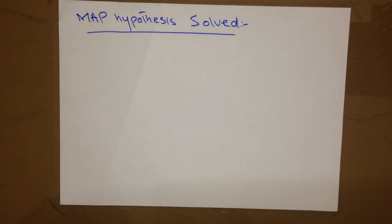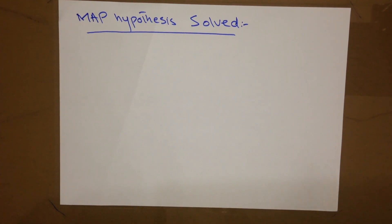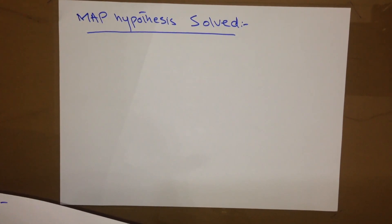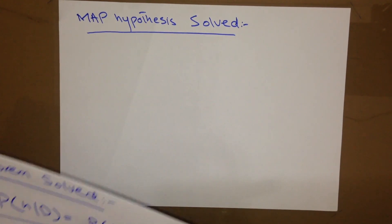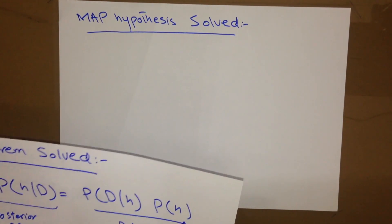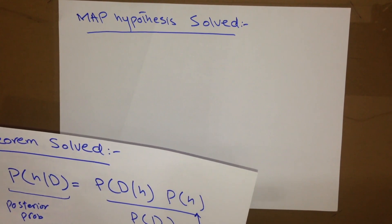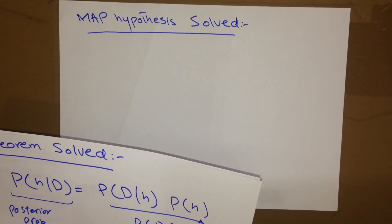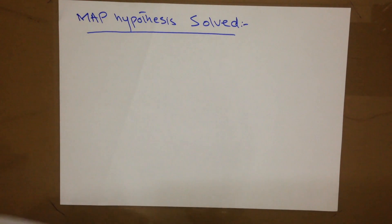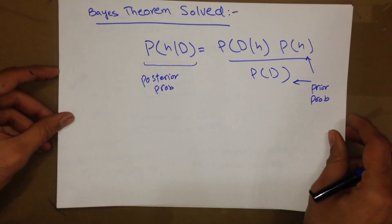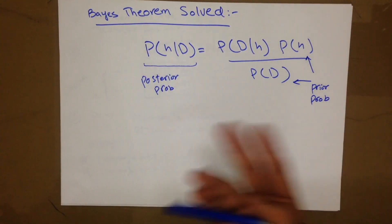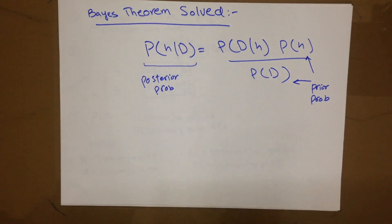Hello everyone, this is Akib. I'm very excited about creating another video on Bayesian theorem to solve a MAP hypothesis. In the last video there was a problem so the video was a bit blurred, but don't worry because we are going to review what we have already developed and solved in the previous video. We have seen Bayesian theorem problems and all the probability.